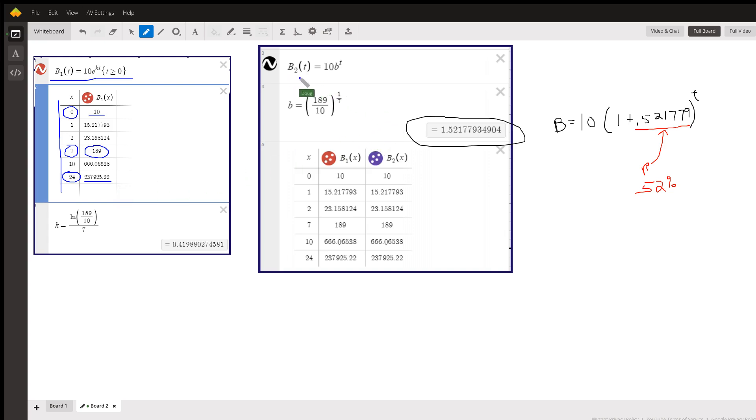Over here, I've used the second formula, where b is 189 over 10 raised to the 1/7th power, which has a value of 1.521779, and so on. And we get the same exact table values for both of these functions.